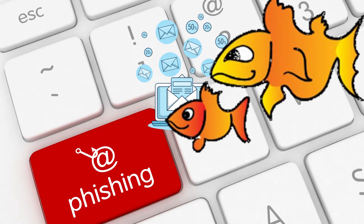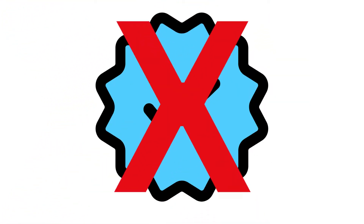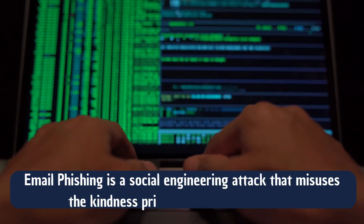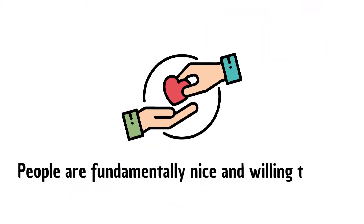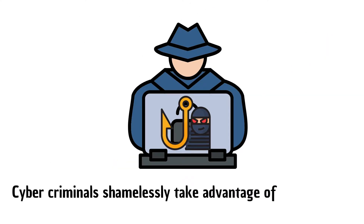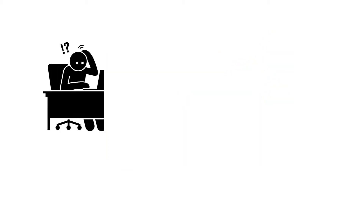What is a phishing email? Phishing is a technique in which an attacker sends an email, text message, or malicious web URL claiming to be from a legitimate source, but it is not. Email phishing is a social engineering attack that misuses the kindness principle in human behavior. People are fundamentally nice and willing to help, and in today's digital age, cyber criminals shamelessly take advantage of our kindness to trick us into sharing sensitive information.